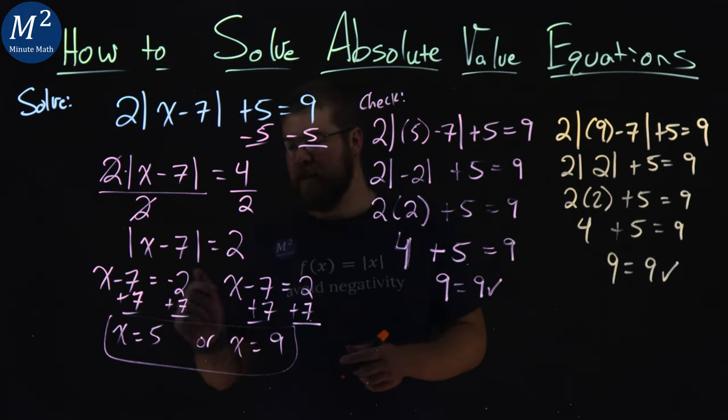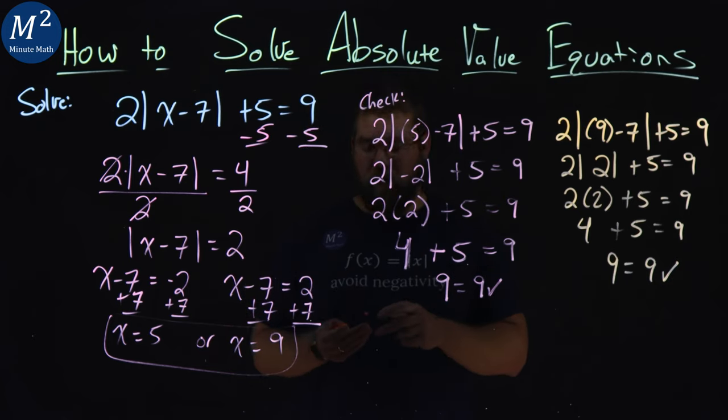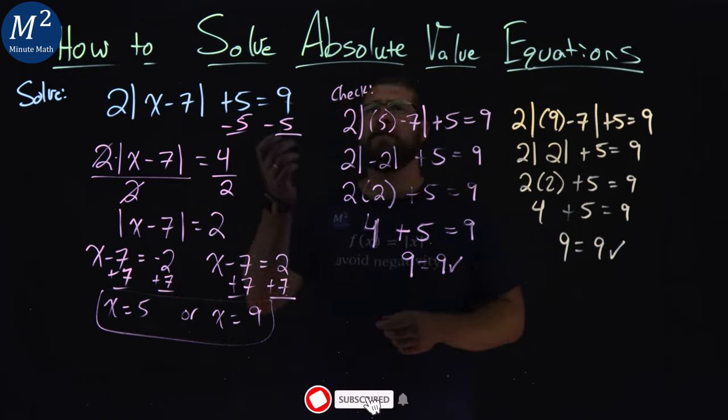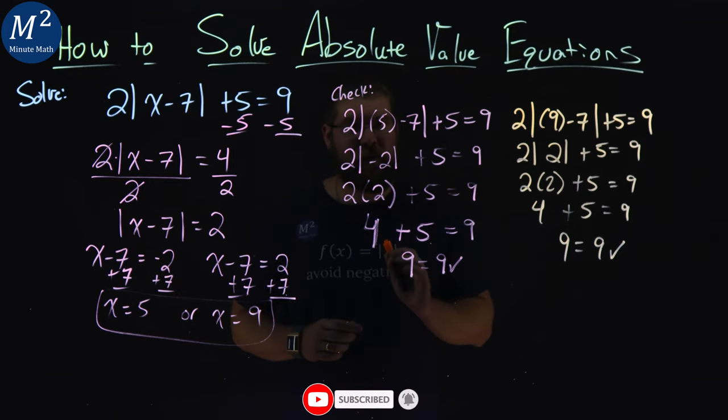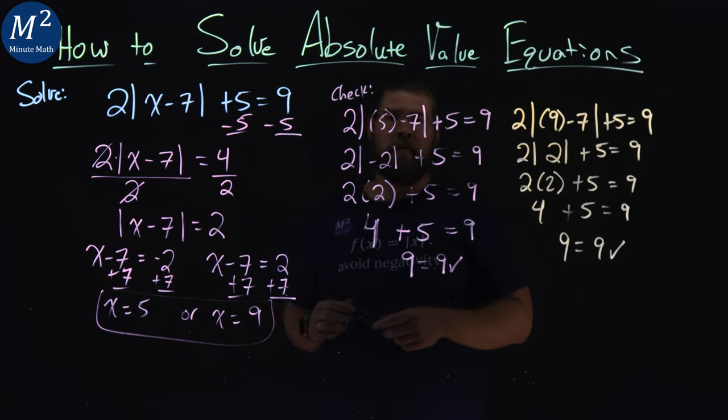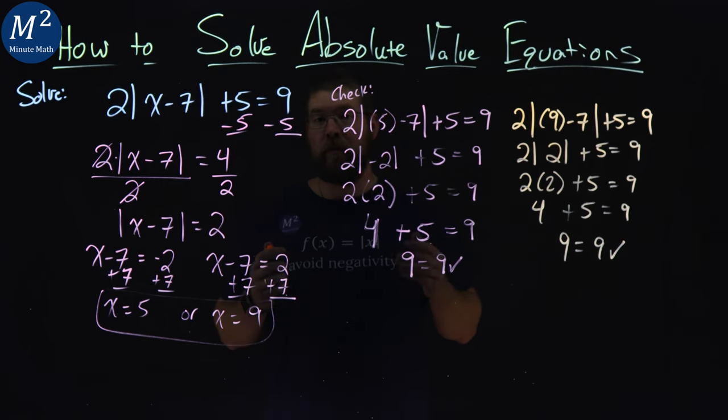So both of our values, x equals 5 and x equals 9, are solutions to our absolute value equation. I hope you learned something here on how to solve absolute value equations. If you did, make sure you like this video and subscribe to our YouTube channel. This helps us make more of these free math lessons for you and for everyone else. So as always, thanks for watching.